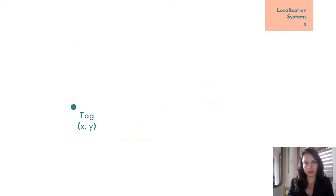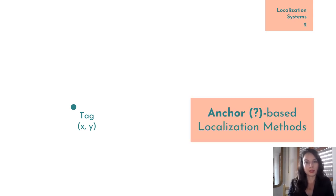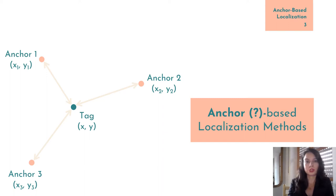There are multiple ways to locate a device, which in localization systems is usually called a tag. Today we will focus on anchor-based indoor localization. But what is an anchor? Well, anchors are helper devices with fixed and known locations, which help us locate a tag by exchanging messages with it.